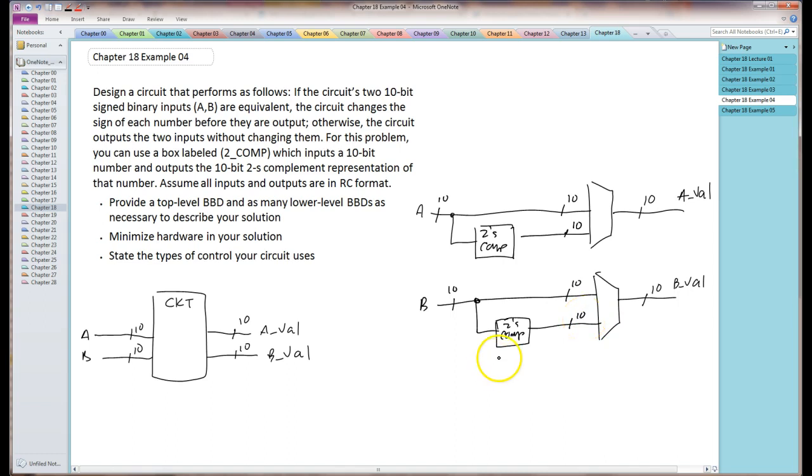Now what's going to control them is going to be the output of a comparator, because up here it says if they're equivalent, do something. Otherwise, do something else. So I know the equivalent output of this comparator is going to control these two muxes.